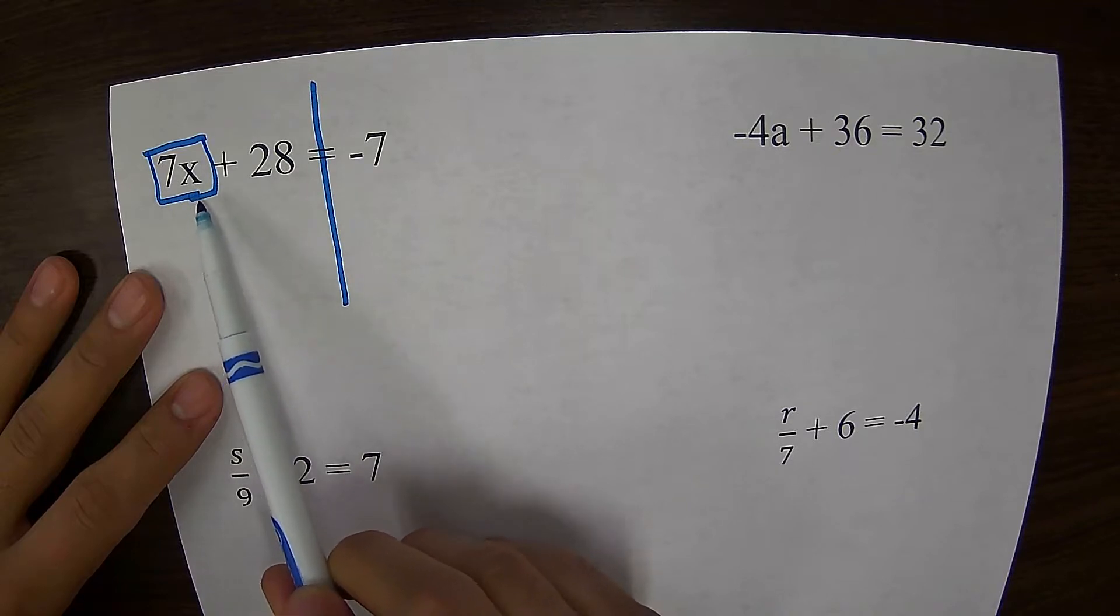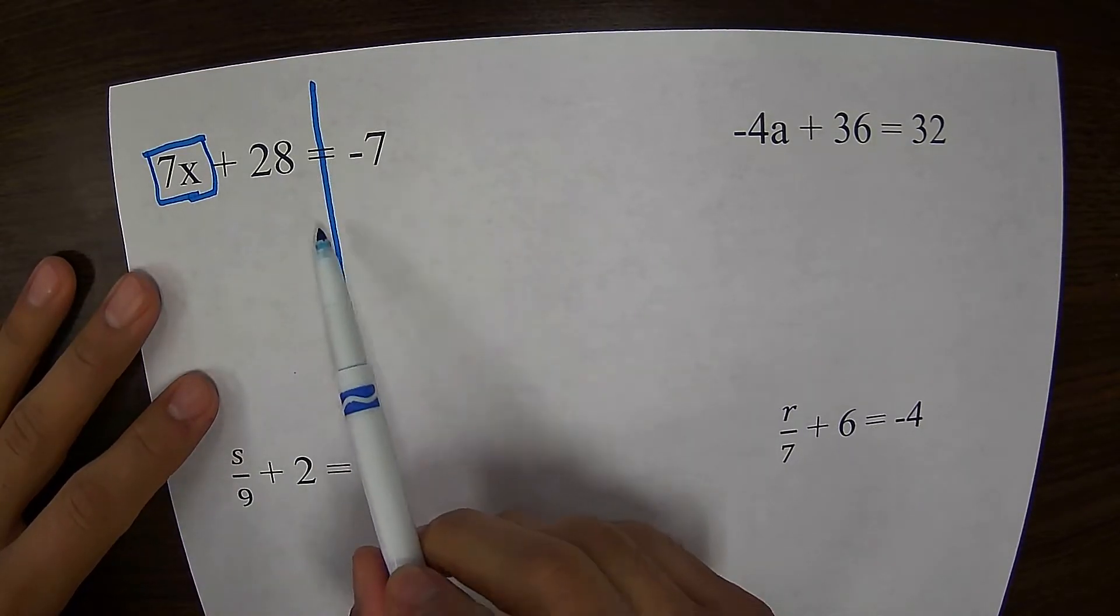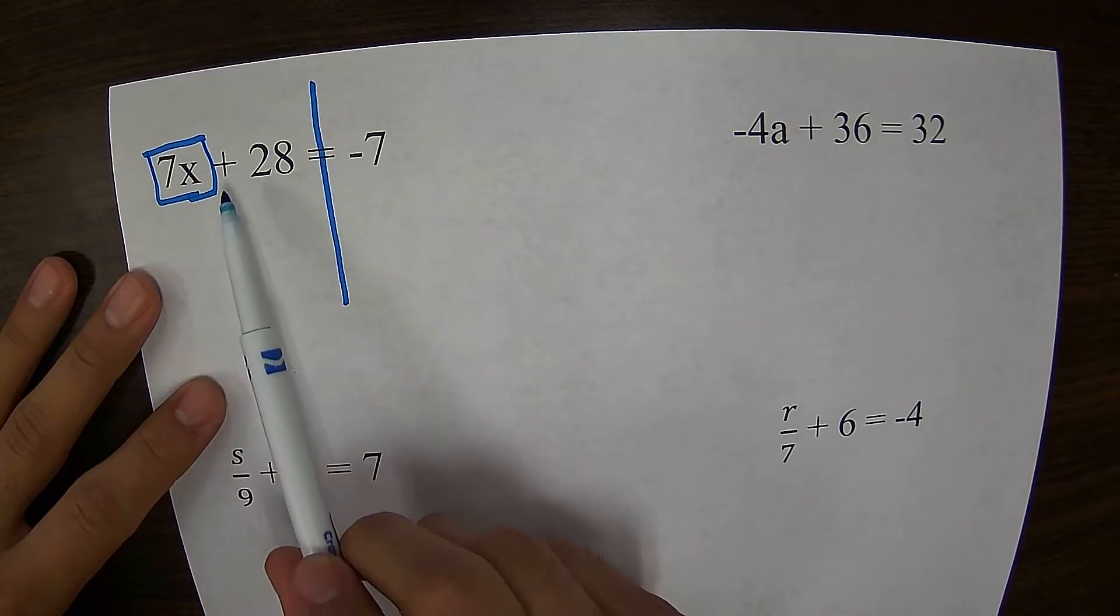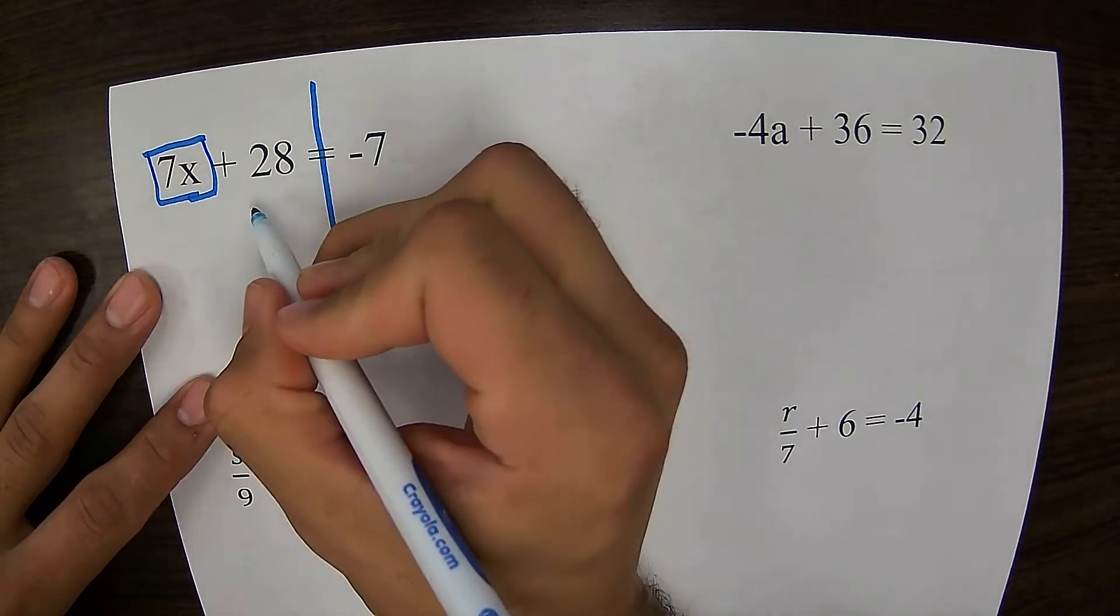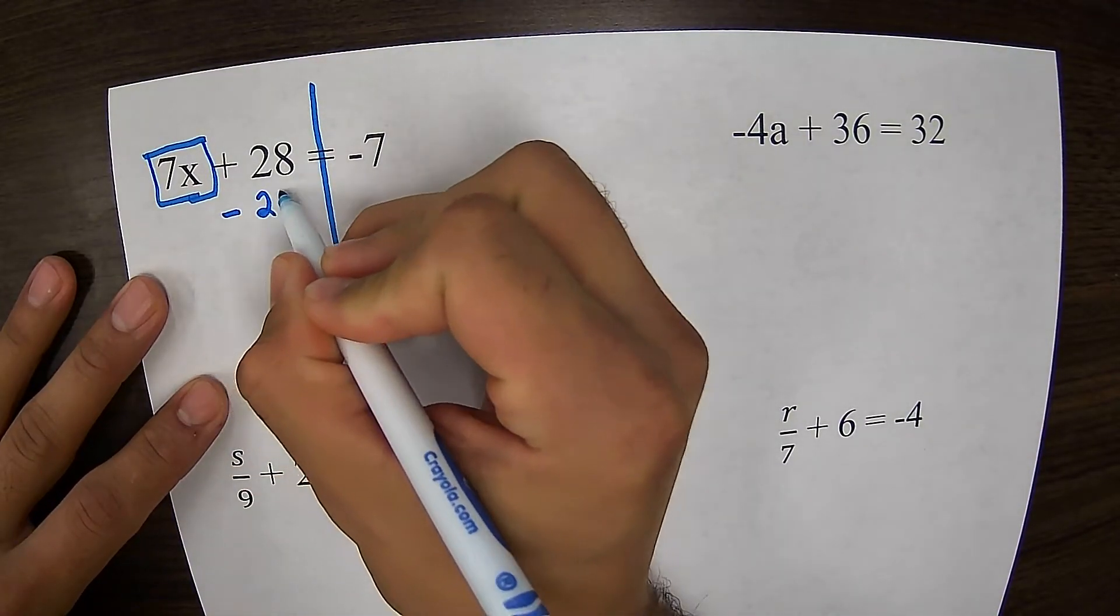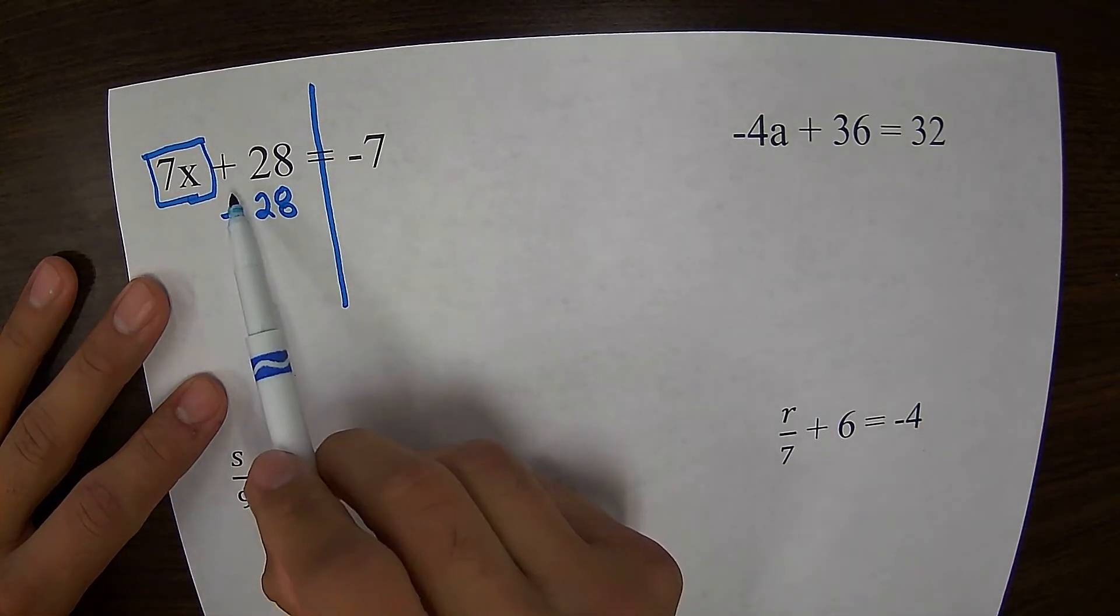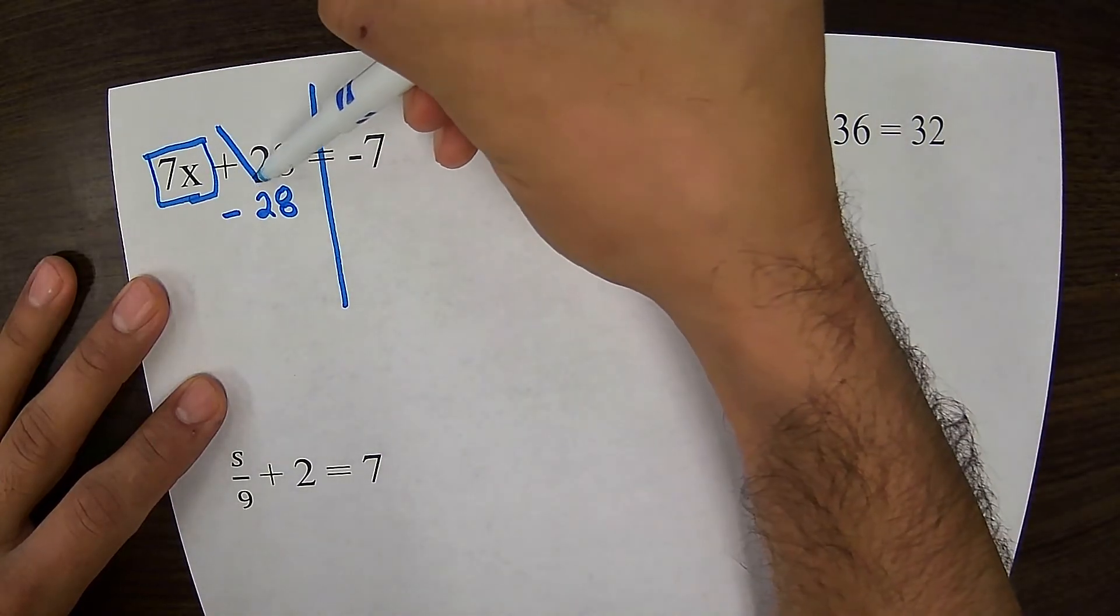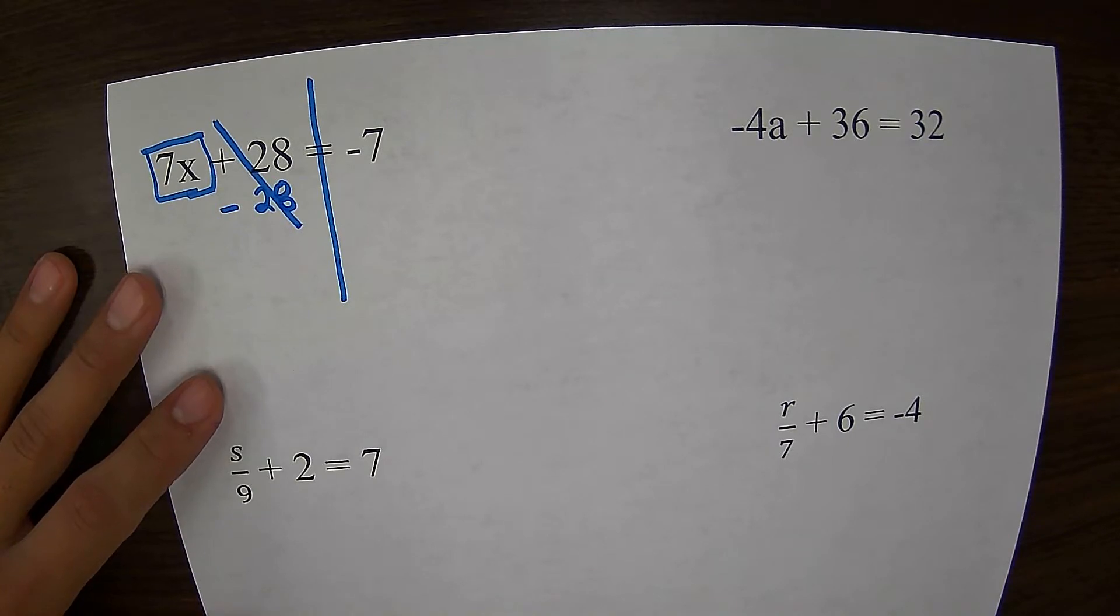We're always trying to isolate our variable. In this case, we want to get 7x by itself because we're trying to get our two-step equation down to a one-step equation. To do that, I need to get rid of this plus 28. The way I can cancel out a plus 28 is by subtracting 28. So this is like 28 positives and 28 negatives. They cancel each other out. They create a zero pair and it goes away.